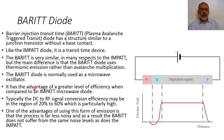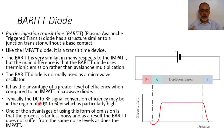It has the advantage of greater efficiency compared with the IMPATT microwave diodes. Typically, the DC to RF signal conversion efficiency of BARITT diodes is in the region of 20 to 60%, which is particularly higher than the IMPATT diode.